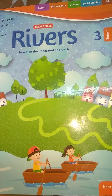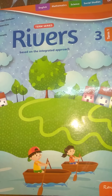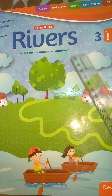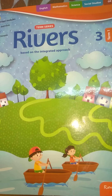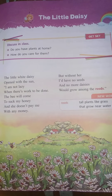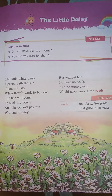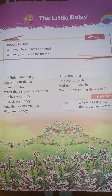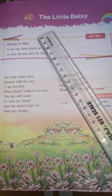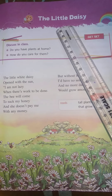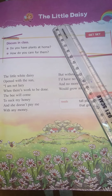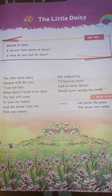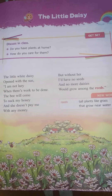Good morning students. Today we are going to see 3rd class term 1 English subject. We have seen the poem The Little Daisy, and now we will see the objectives of this poem.